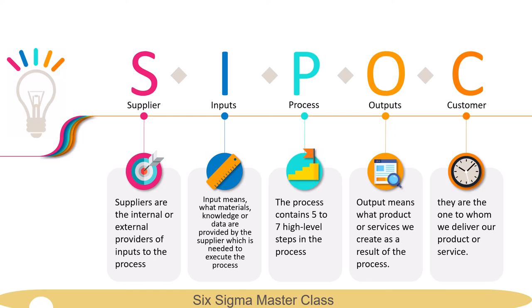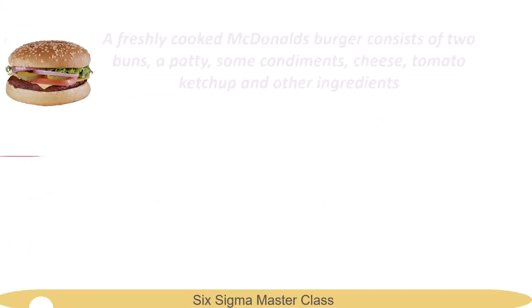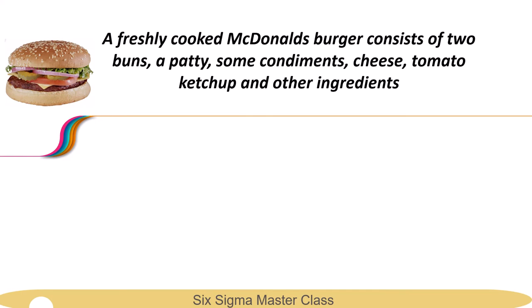Now let's see an example to understand SIPOC. As an example, let's create a SIPOC of the process of cooking a burger. A freshly cooked McDonald's burger consists of two buns, a patty, some condiments, cheese, tomato ketchup, and other ingredients.